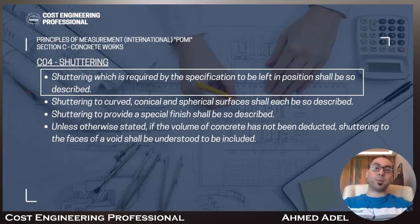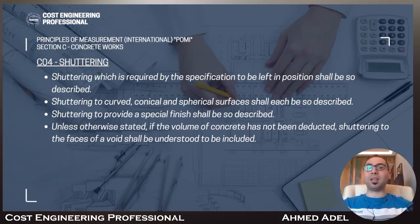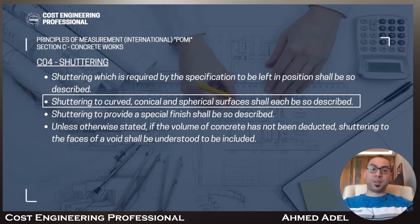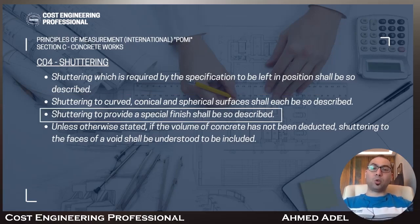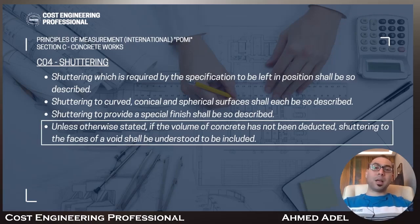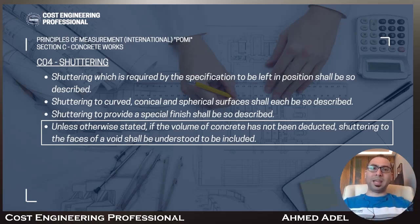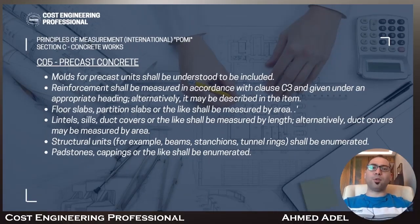Shuttering required by the specification to be left in position — such as dead shutters — shall be so described in the item description. Shuttering to curved, conical, and spherical surfaces shall each be so described, and shuttering to provide a special finish shall also be described. Unless otherwise stated, if the volume of concrete has not been deducted, shuttering to the faces of a void shall be understood to be included.